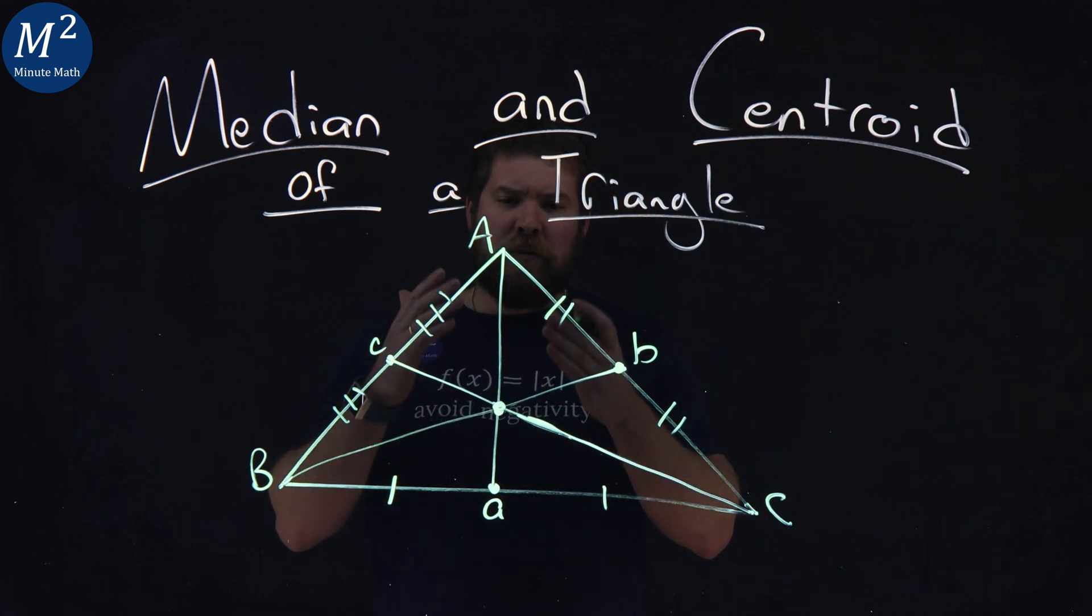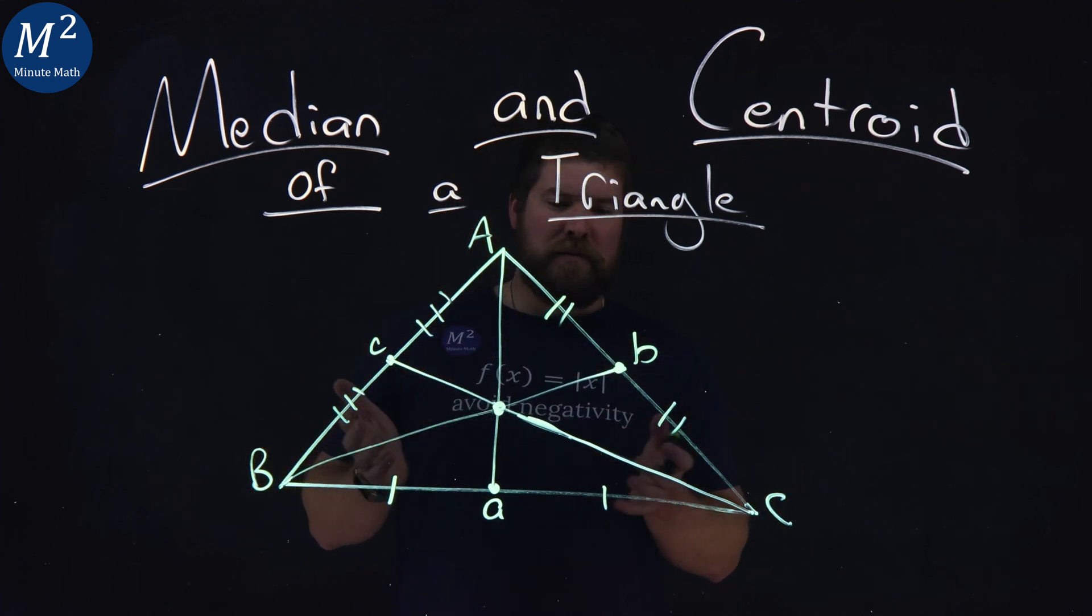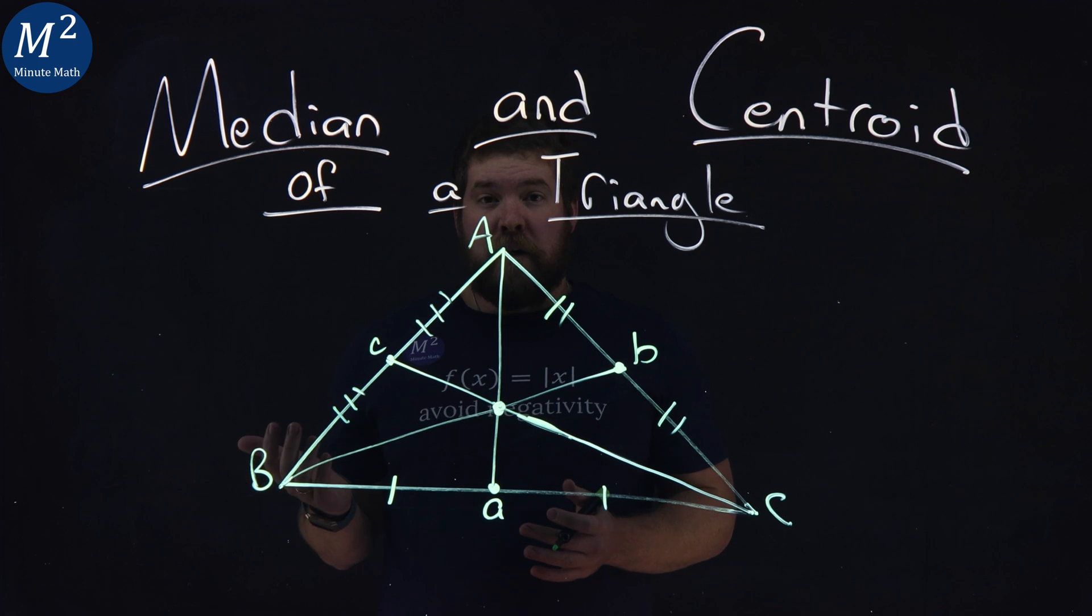Now, if you're like me and you look at this, okay, great. This is a pretty nice, easy triangle. It almost looks isosceles, kind of.